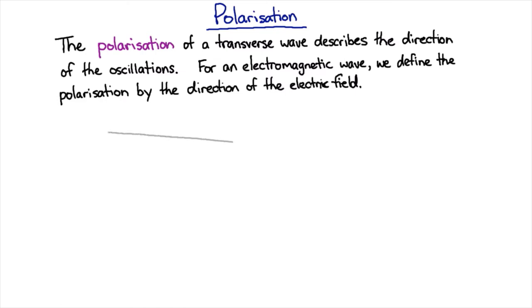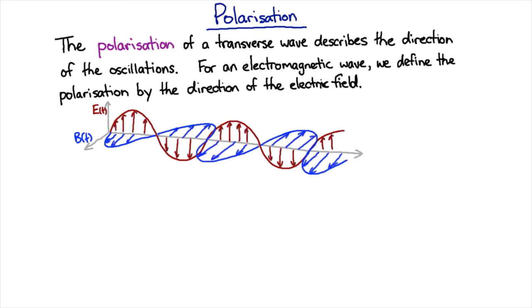So if we have a light wave traveling in this direction, then we're going to have an electric field going up and down in one axis and a magnetic field going in and out on the other axis. In this case, we would talk about the polarization as being up and down.